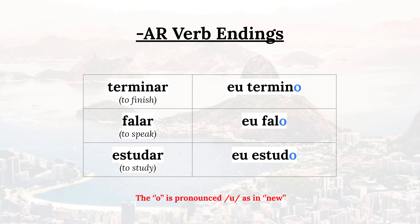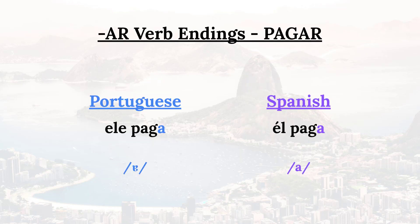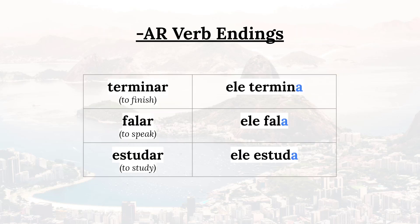Then 'he pays' in Portuguese is 'ele paga.' Notice how that final A is pronounced with an 'ah' sound, as in the word 'Cuba' — 'paga' — which is different from the A sound in the Spanish word 'paga.' So 'he finishes' would be 'ele termina,' 'he speaks' is 'ele fala,' 'he studies' is 'ele estuda.' The final A is pronounced 'ah' as in 'Cuba.'